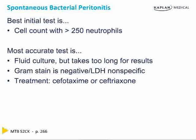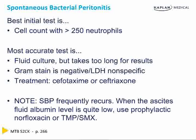Treatment is always cefotaxime or ceftriaxone. Remember, SBP frequently recurs. When there is ascites and the fluid albumin is low, you must consider prophylactic norfloxacin or Bactrim.